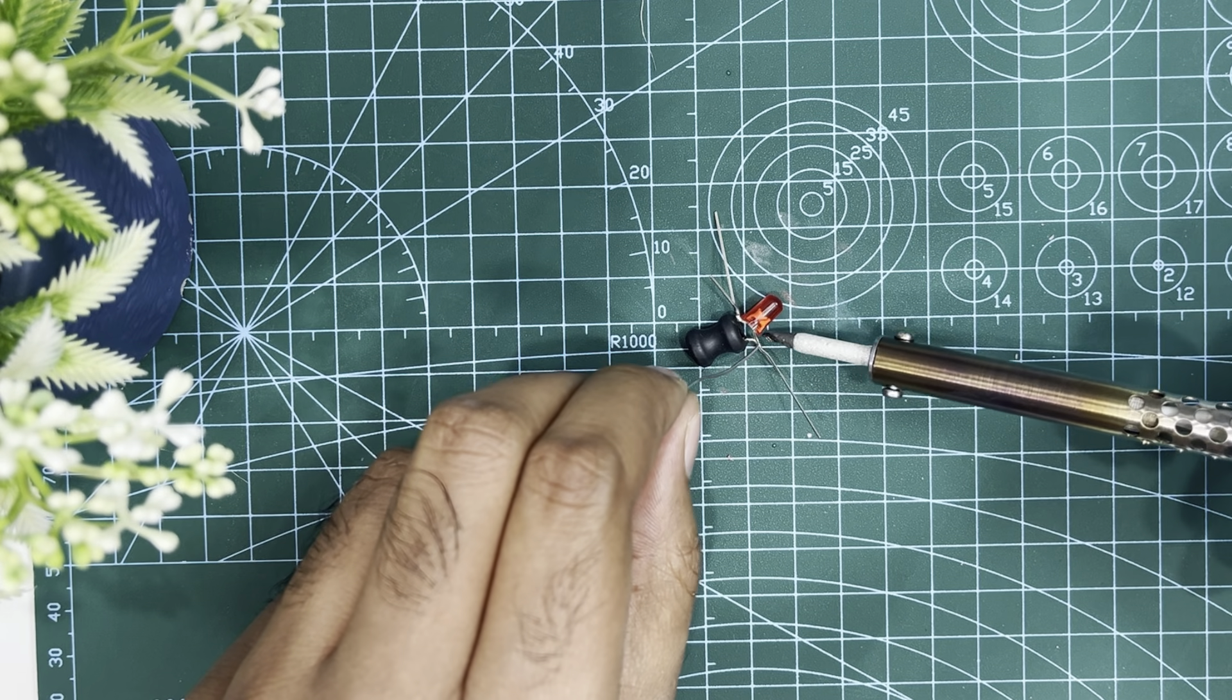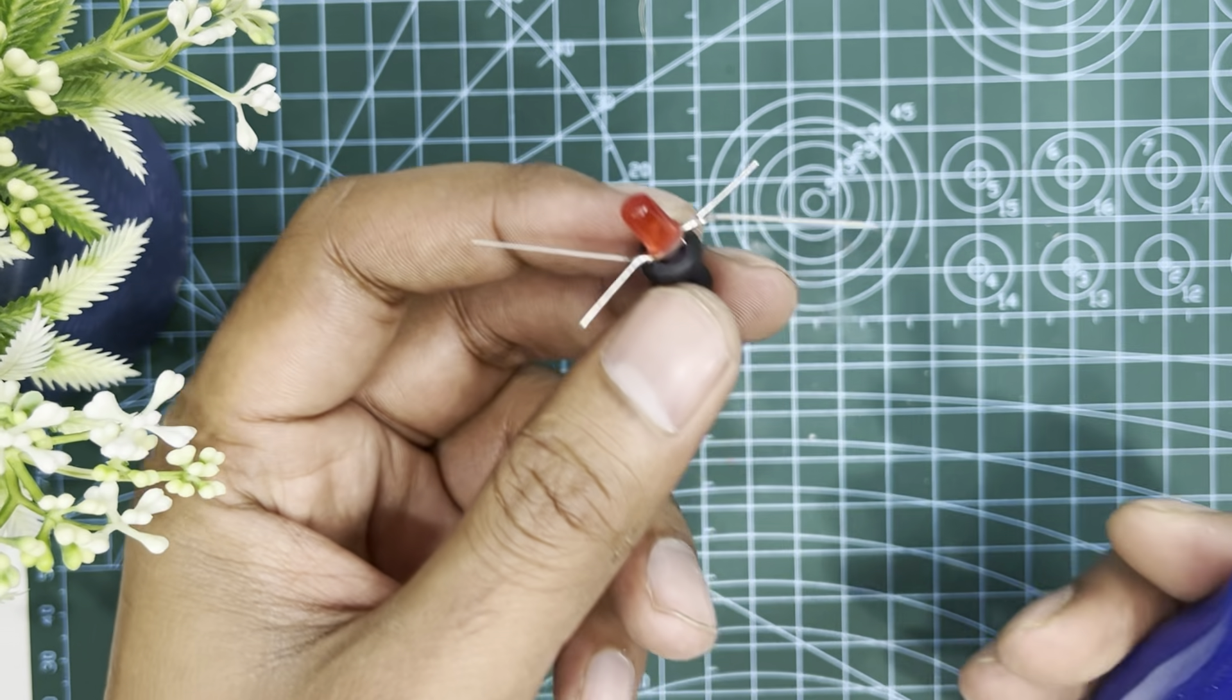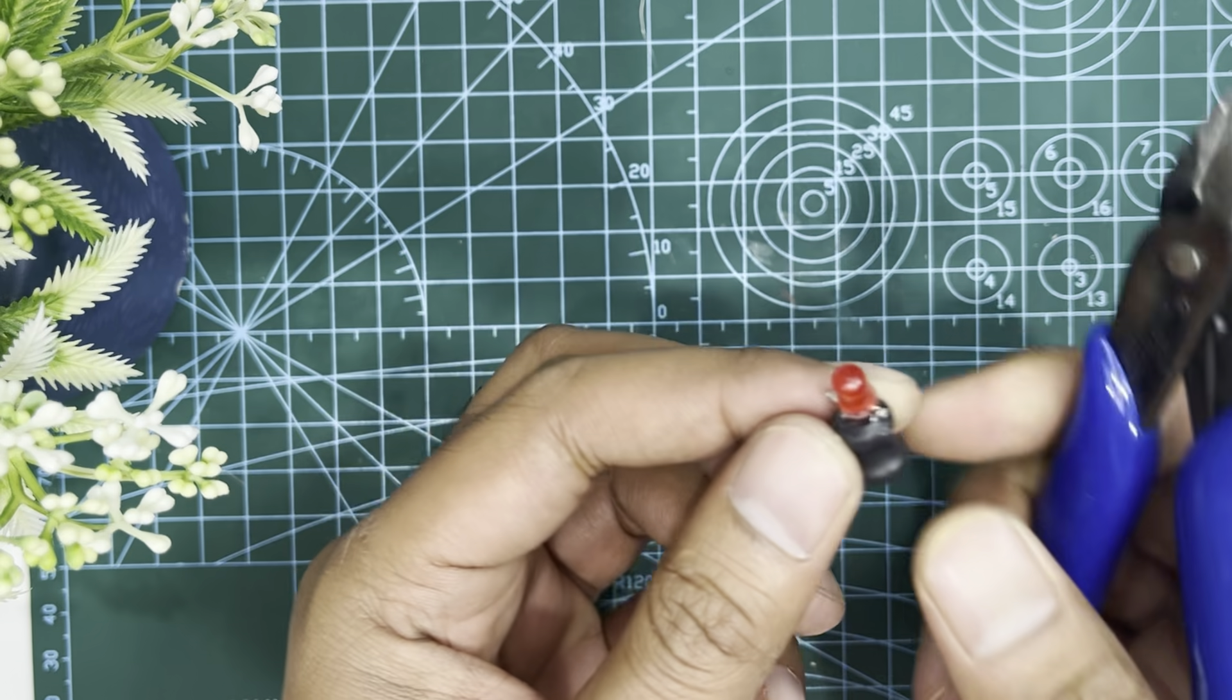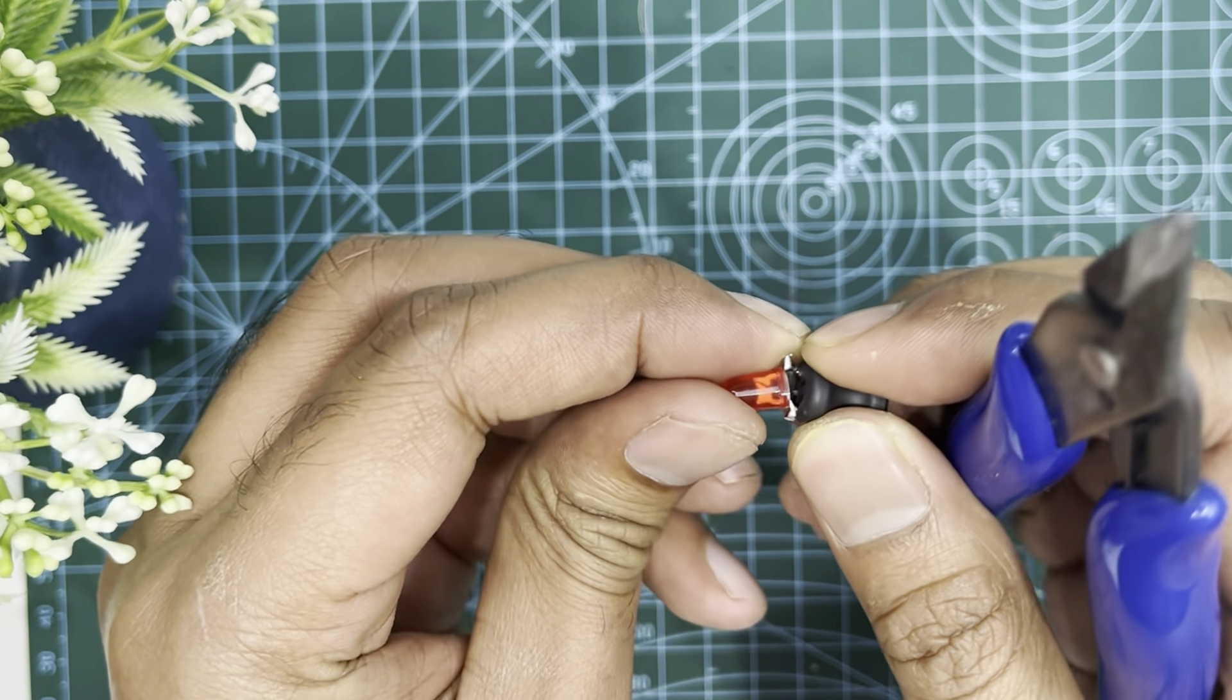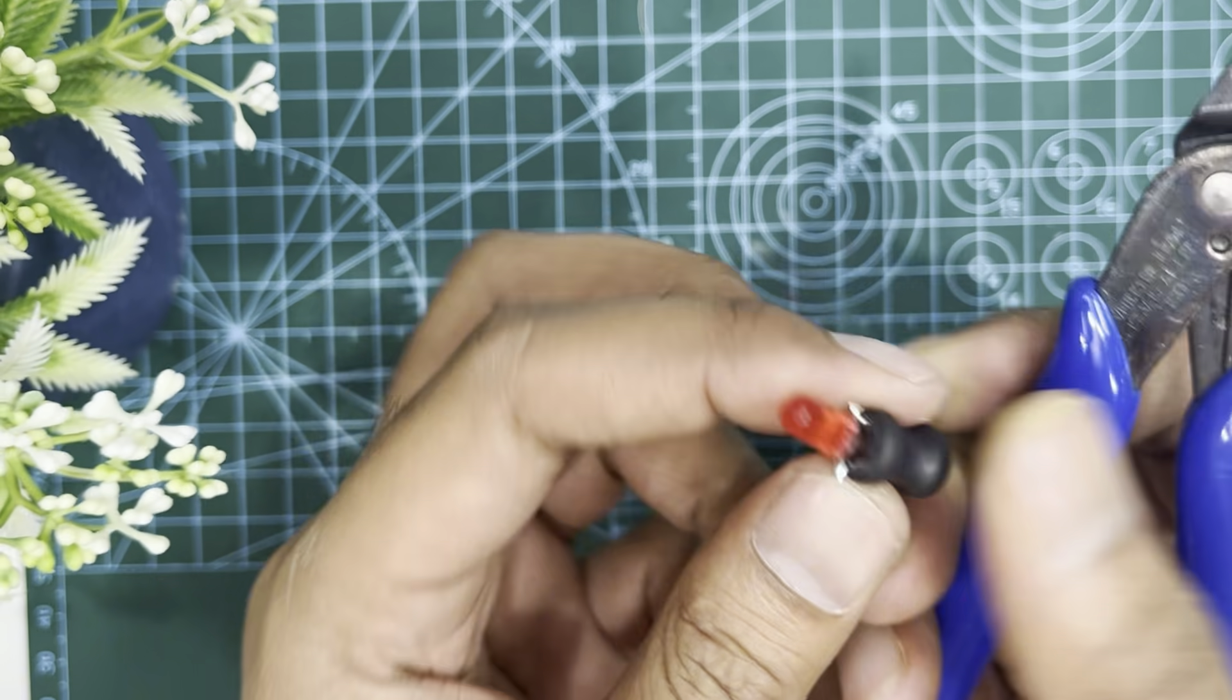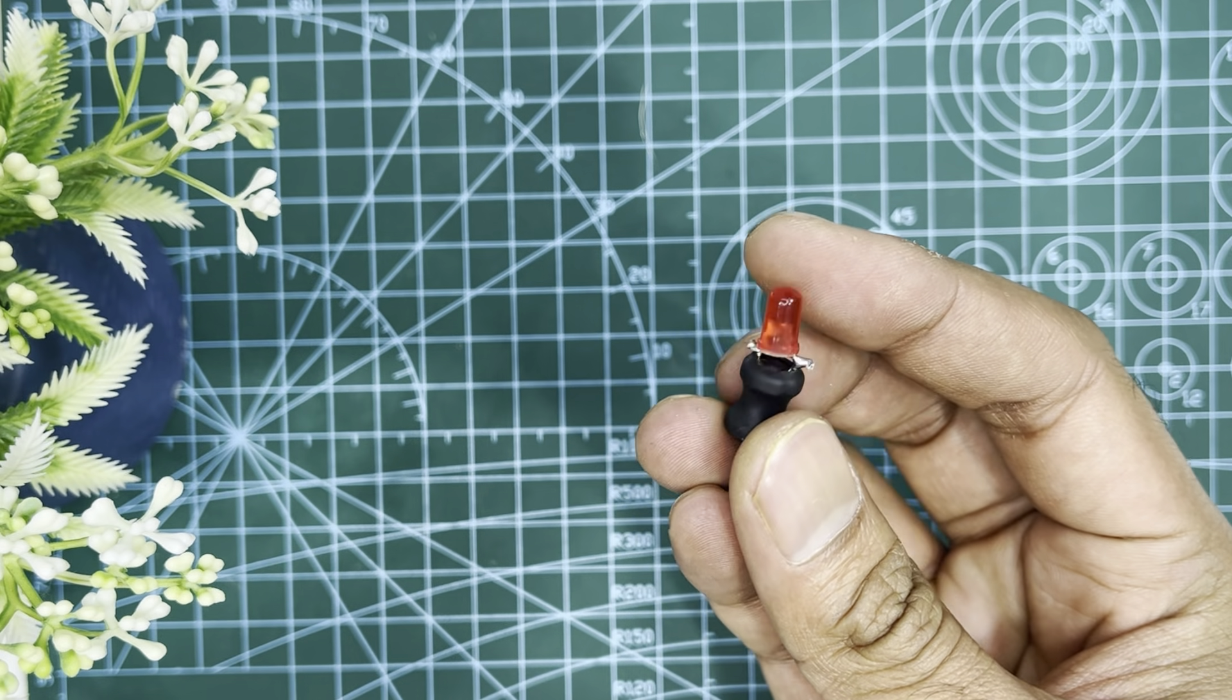To make it stronger, I am soldering it. After soldering, trim the excess leads. This inductor was 470 microhenry. You can use any inductor between 400 microhenry to 600 microhenry.